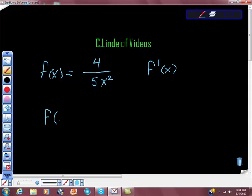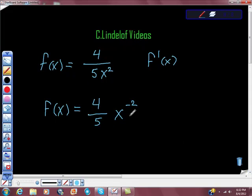I'm going to look at this and say that f of x to me is the same as 4 fifths x to the negative second power. Now, I'm going to apply the power rule to that. And we have negative 2 times 4 fifths is negative 8 fifths. We're going to decrement this exponent. So, we're going to reduce it by 1. So, minus 1 is x to the negative third power. Let me rewrite my 5 so it's more clear.